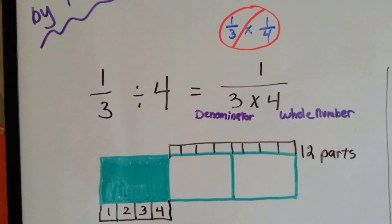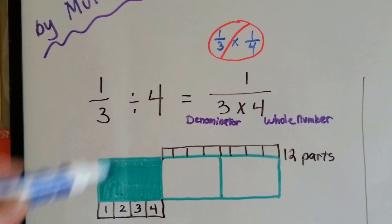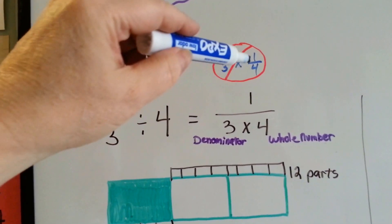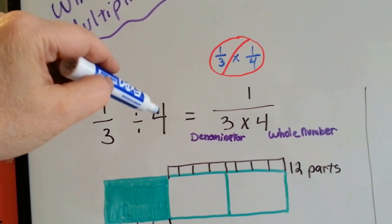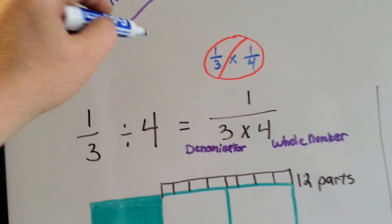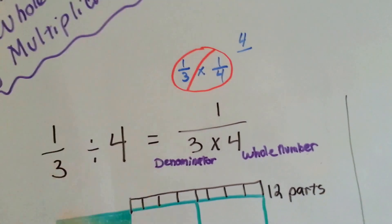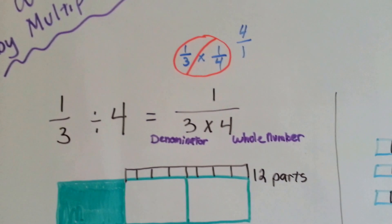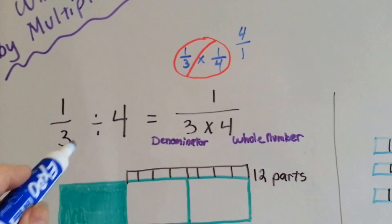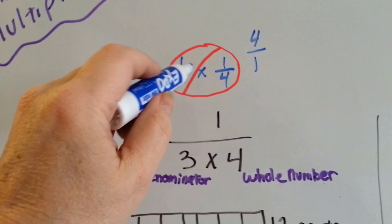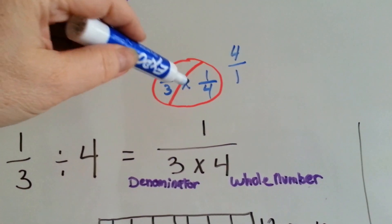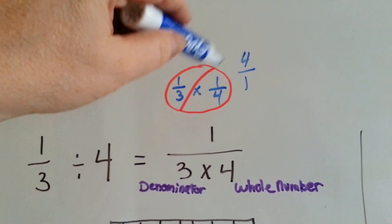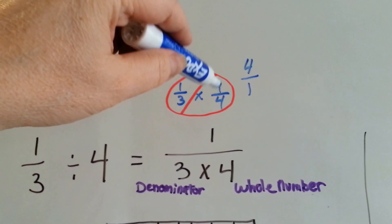When we see 1 third divided by 4, most books would have you write it like this: 1 third times 1 fourth. This 1 fourth is really the reciprocal of 4, because 4 can be written as 4 over 1. Then, a lot of math books and math teachers say, when you see 1 third divided by 4, write it as 1 third times 1 fourth, because we flipped the 4 over 1 upside down to be its reciprocal.